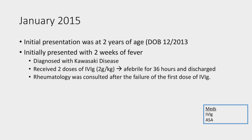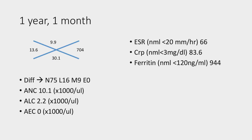She was diagnosed with Kawasaki disease in the emergency department and received two doses of IVIG. Rheumatology was consulted after the failure of the first one. After the second IVIG, she was afebrile for 36 hours and was subsequently discharged. These were her labs on that initial admission at essentially two years old. She fit pretty consistently with Kawasaki disease — normocytic anemia, thrombocytosis, high sed rate, high CRP, and elevated ferritin, but not out of the range expected for Kawasaki disease.